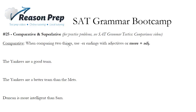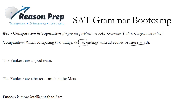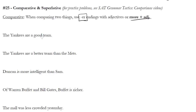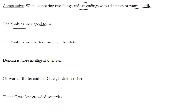The comparative is when you're comparing two things. You use the -ER endings with adjectives, or 'more' plus an adjective. So for instance, the Yankees are a good team. The Yankees are a better team than the Mets. Notice we're comparing two things and we're using 'better' — the -ER ending — because we're comparing two things.